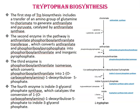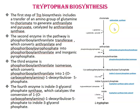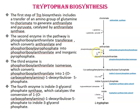Next is tryptophan biosynthesis. The first step includes the transfer of an amino group of glutamine to chorismate to generate anthranilate and pyruvate. This step is catalyzed by the enzyme anthranilate synthase. The second enzyme of this pathway is phosphoribosylanthranilate transferase, which converts anthranilate into phosphoribosylanthranilate and releases inorganic pyruvate.